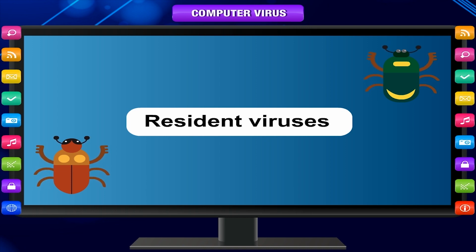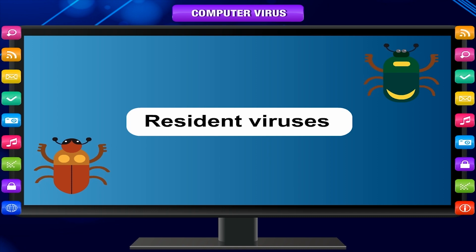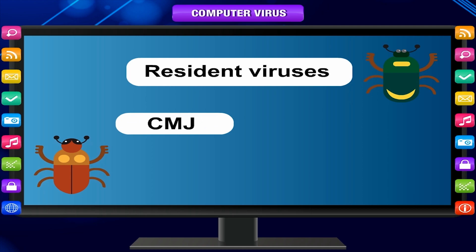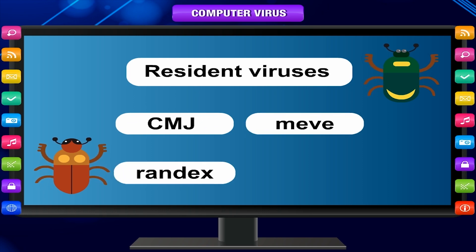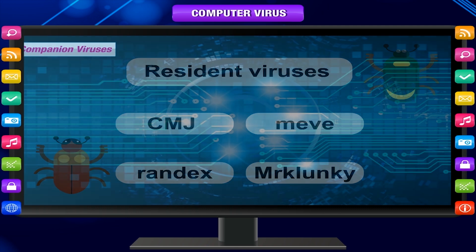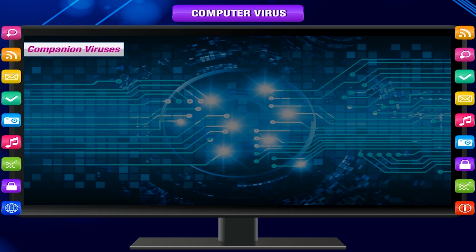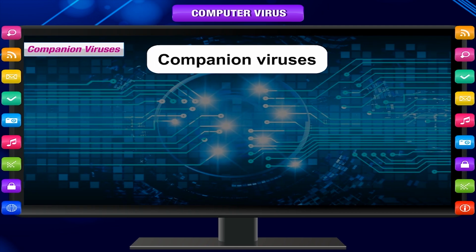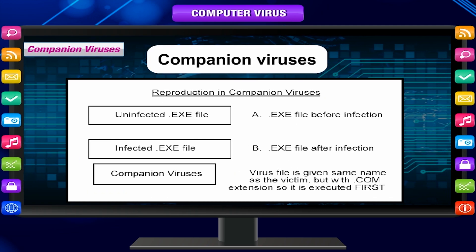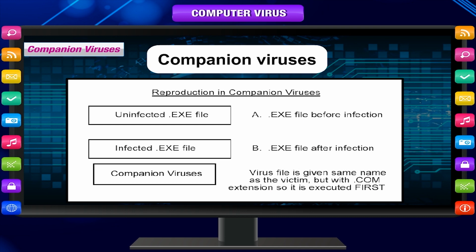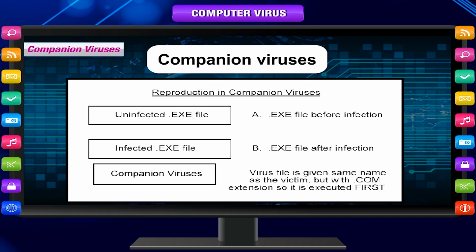Depending on the programming of the virus, they can be tricky to find and remove. Examples of resident viruses are CMJ, Meeve, Randix, and Merklanki.